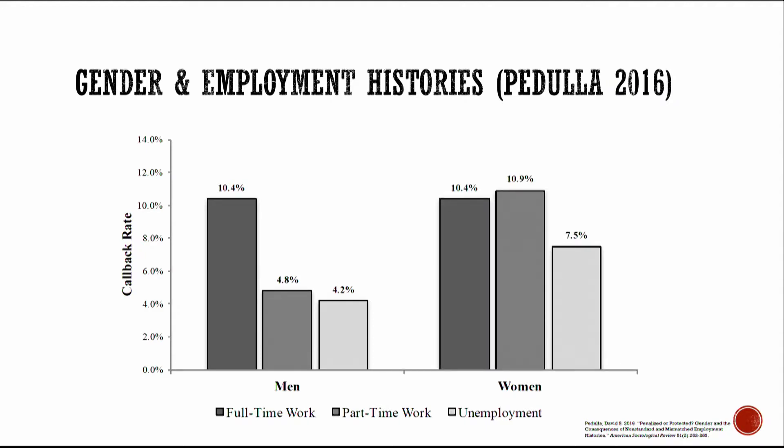For women, things look quite different. Women with full-time employment histories are called back 10.4% of the time, compared to 10.9% for women with part-time histories — no statistically significant difference. There's a slight drop for unemployed women, but it's also not statistically significant. So we see strong penalties for men who move into part-time jobs, which are heavily feminized in the United States, while women face no such penalties. A complementary survey experiment shows that some of the penalty for men with part-time work accrues because they're seen as less committed to their careers — again, the theme of commitment emerges.